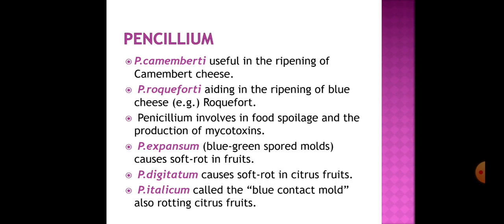The next fungi is Penicillium, which is widely used in the food industry. Penicillium camemberti is useful in ripening of camembert cheese. Penicillium roqueforti is used in ripening of blue cheese, also known as roquefort cheese. Penicillium is also involved in food spoilage and is known for production of mycotoxins. Some species cause plant diseases, like Penicillium expansum, also known as blue-green spore mold.